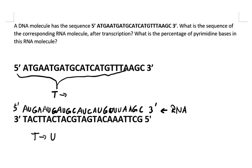Now to the second part of the question: what is the percentage of pyrimidine bases in the RNA molecule? We know that pyrimidines, that would be uracil and cytosine. So all we need to do is calculate the number of U's and C's.